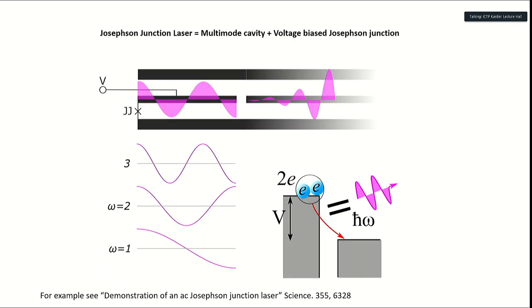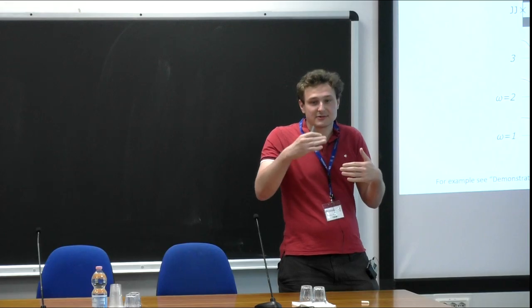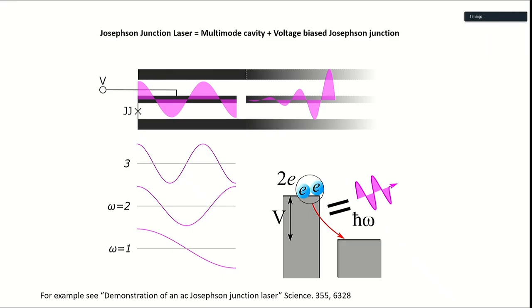So a Josephson Junction Laser, unfortunately, it's the same circuit roughly as we've seen in the previous two talks, but I've drawn it very differently. The previous talks were looking mostly at the case of a voltage bias on a Josephson Junction that is in series with an oscillator, and there's a process where Cooper pairs lose their energy by going to a lower voltage, and that energy goes into photons in the oscillator.